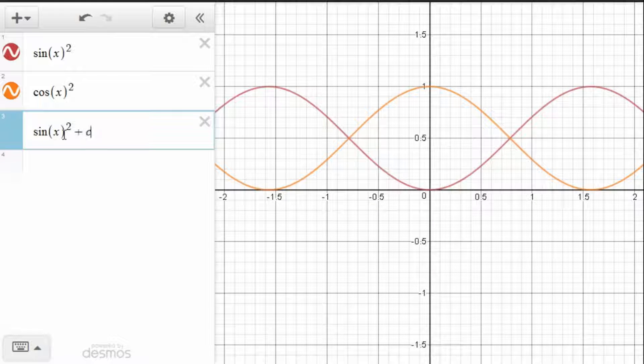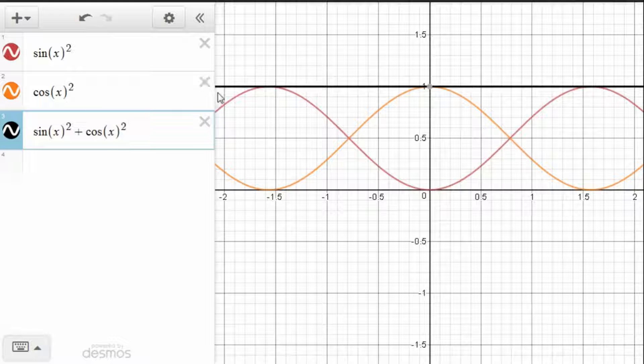Sine of x squared plus cosine of x squared. And we see that indeed we get the line 1.